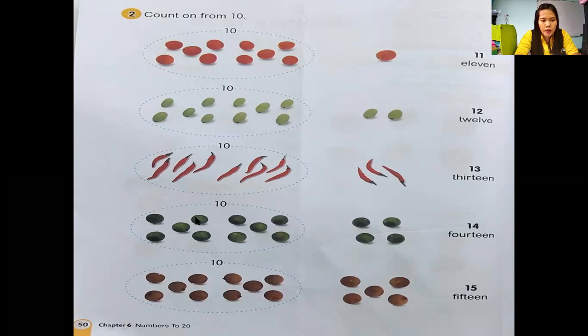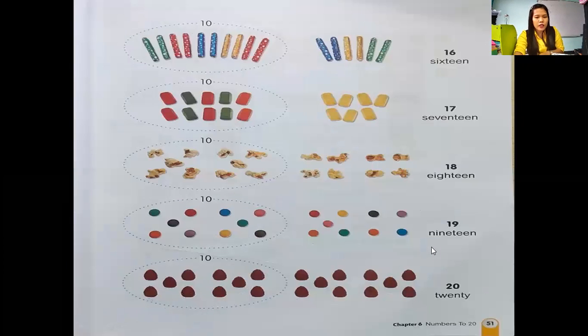Next, remember, no need to count again in this circle because this is 10. 10 lime, 10 jeruk nipis. 10 and 4 make 14. 10, 11, 12, 13, 14. This one: 10, 11, 12, 13, 14, 15. So 15.